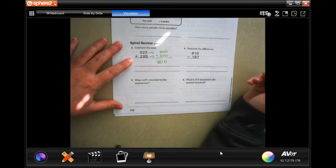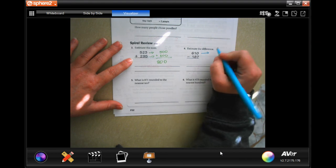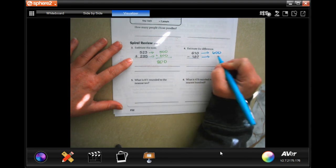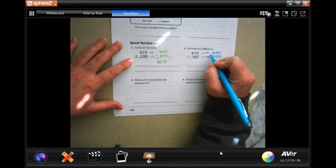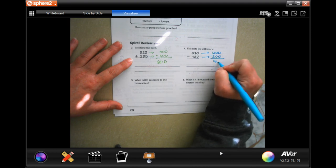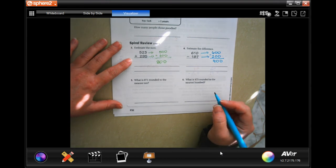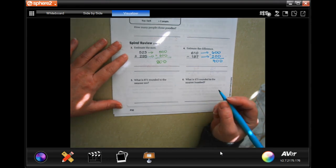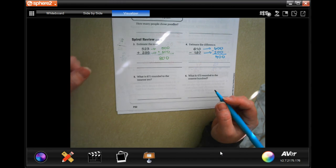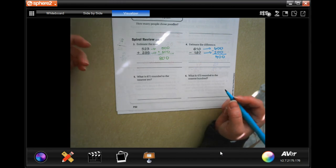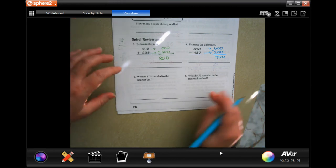It doesn't matter, as long as it's a reasonable estimate. Now we're going to estimate the difference. Well, six-ten would round to six hundred, and one hundred and eighty-seven would round to about two hundred. So, subtract, and we're going to get four hundred. You can put about in front of them if you want. That's okay, it doesn't change the answer.